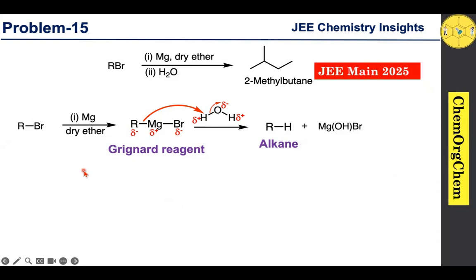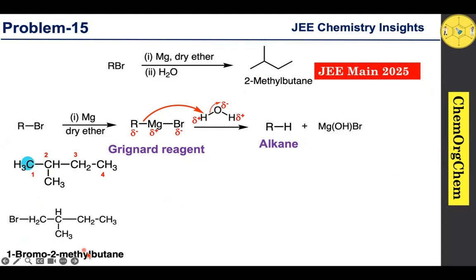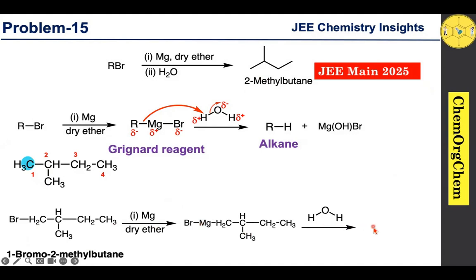Redrawing the 2-methylbutane structure and numbering the carbons again: if the first carbon has bromine substitution, that gives us 1-bromo-2-methylbutane. This reacts with magnesium in dry ether to form the Grignard reagent, which reacts with water to produce 2-methylbutane as the final product. This is our fourth alkyl bromide.